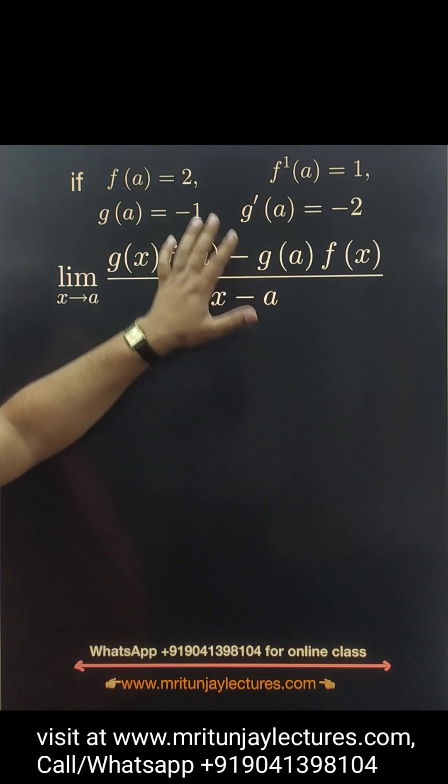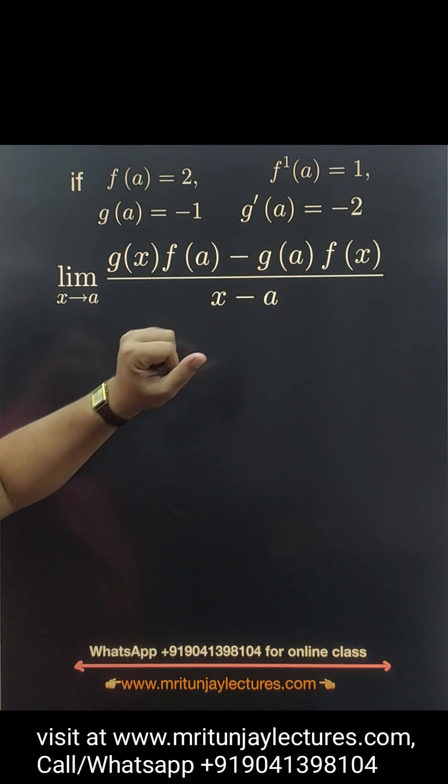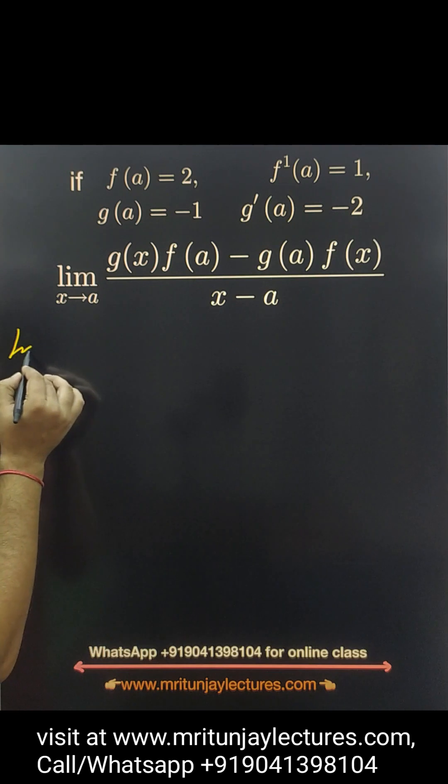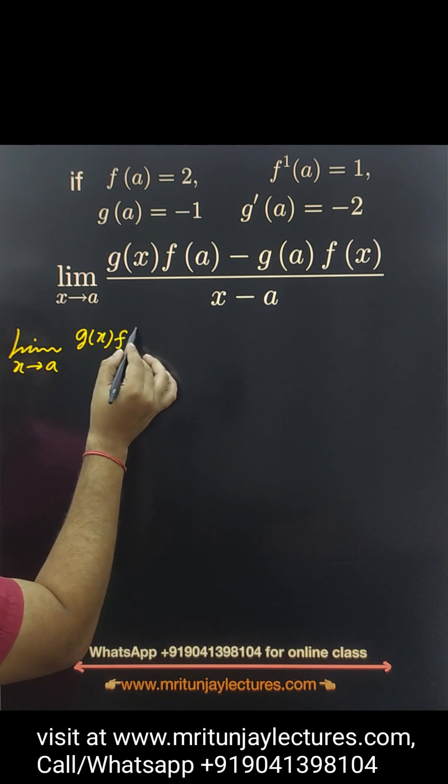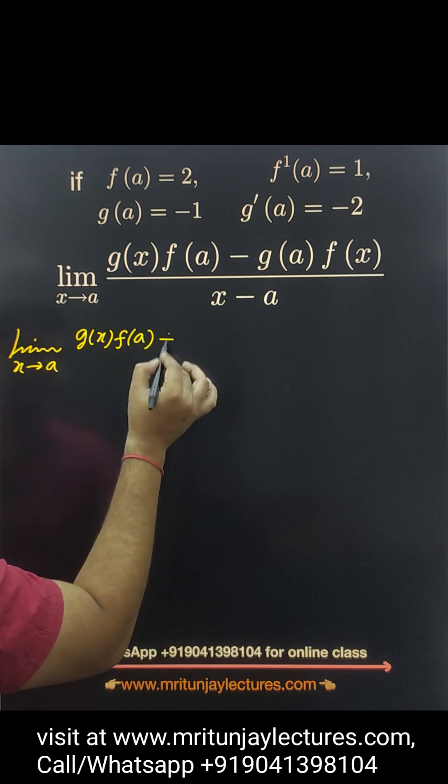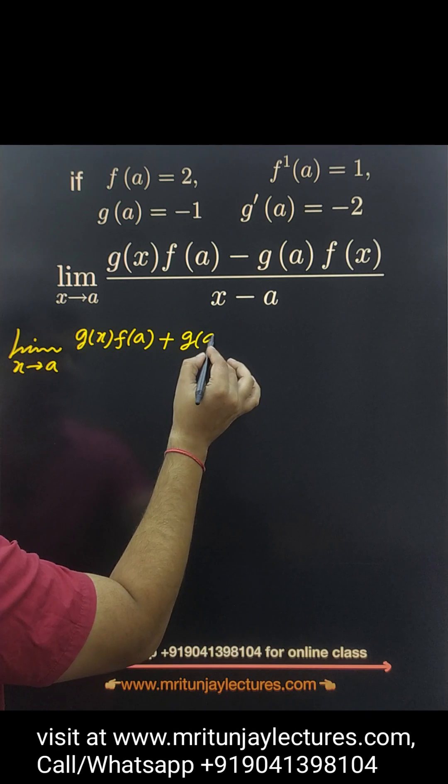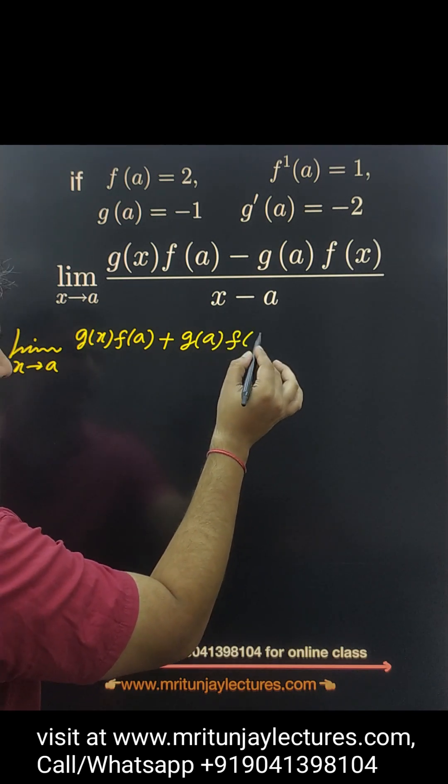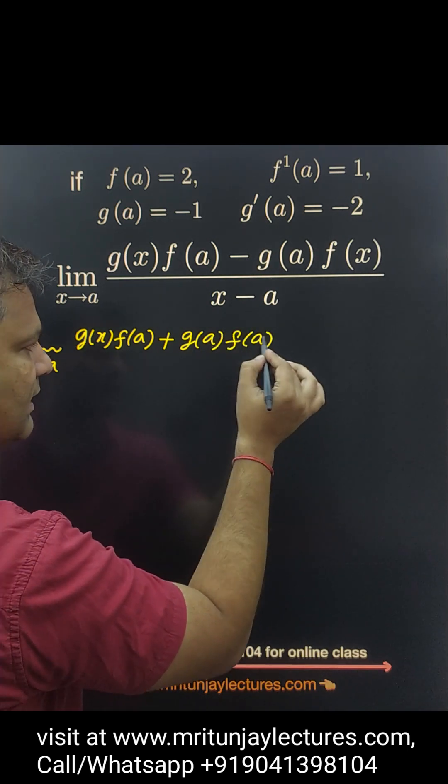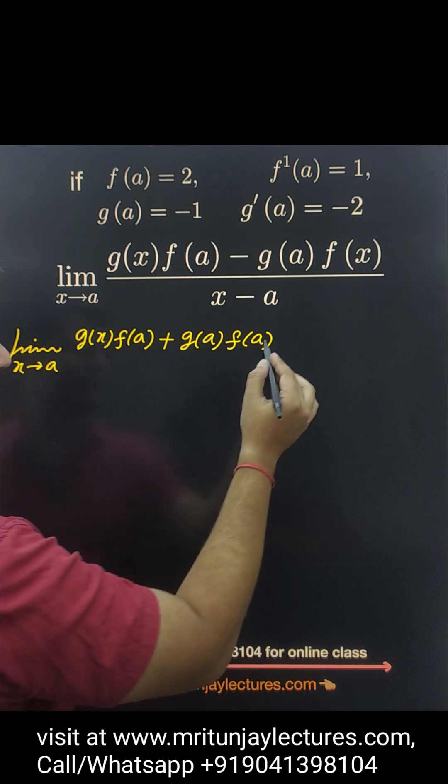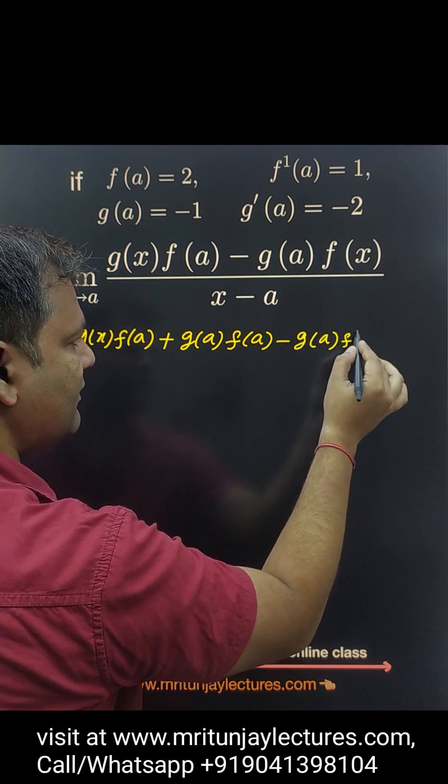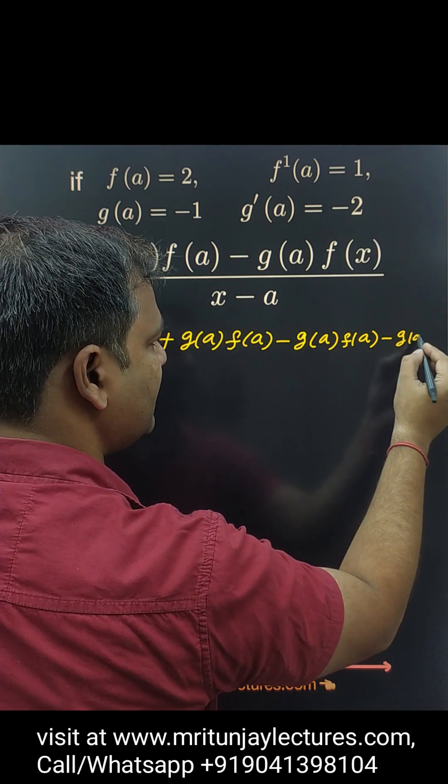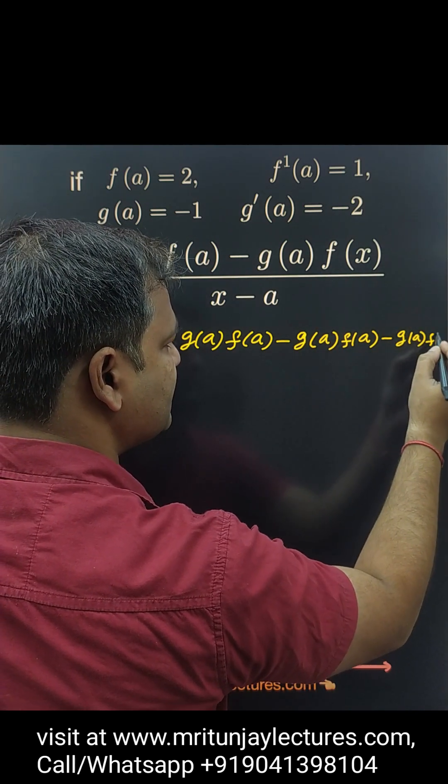First of all, this whole scenario is converted like that one. Look here, if limit x tends to a, this one written g(x) into f(a). If g(a) into f(a) is added and also subtracted, g(a) into f(a) minus g(a), this one written f(x).